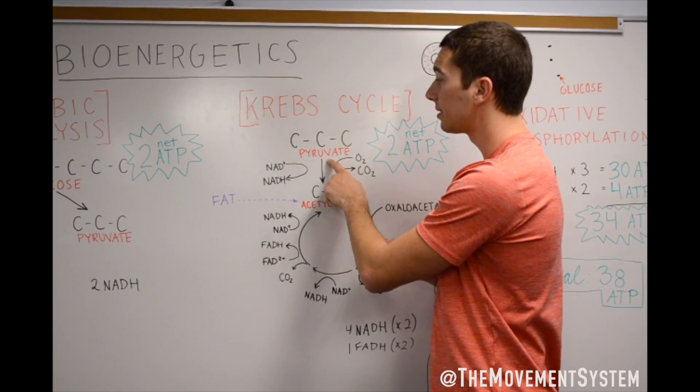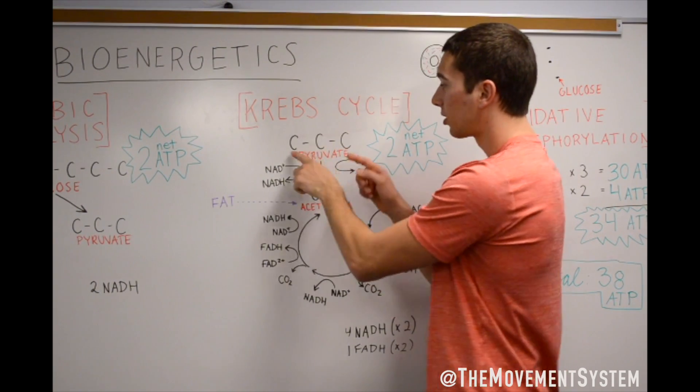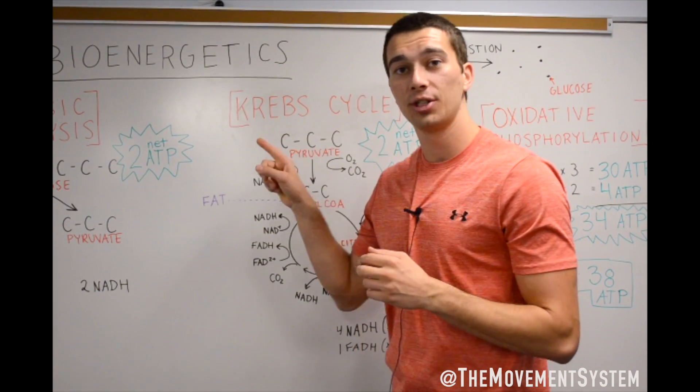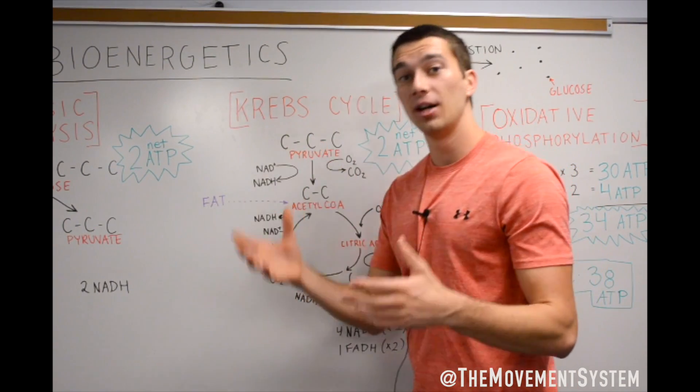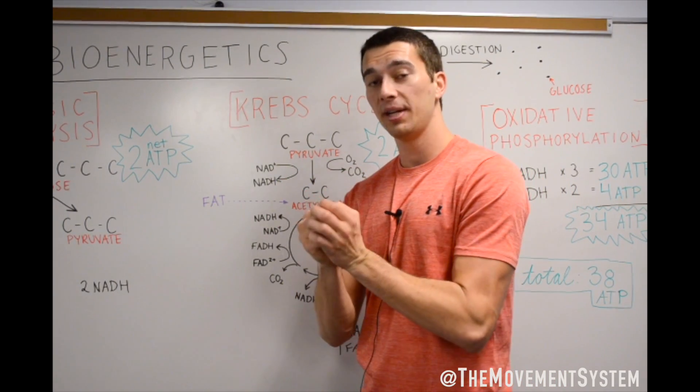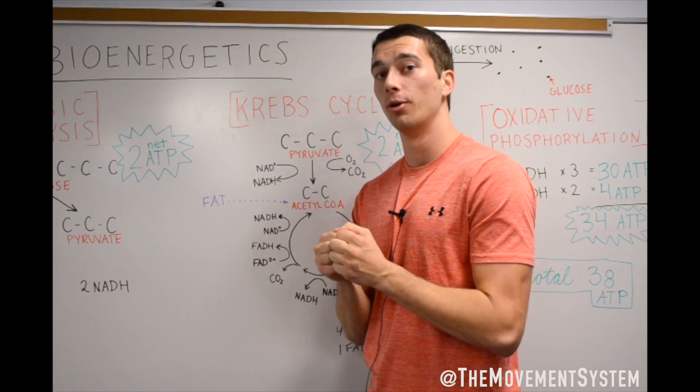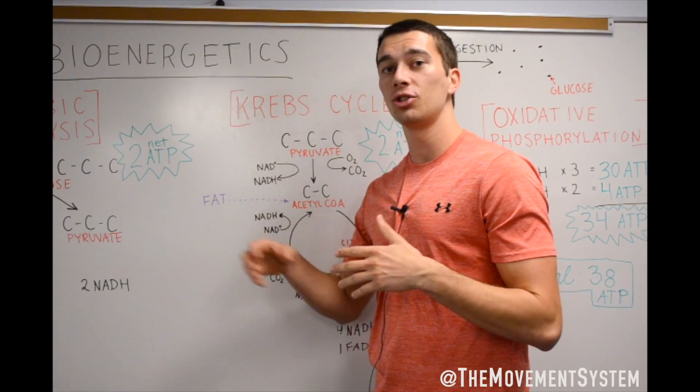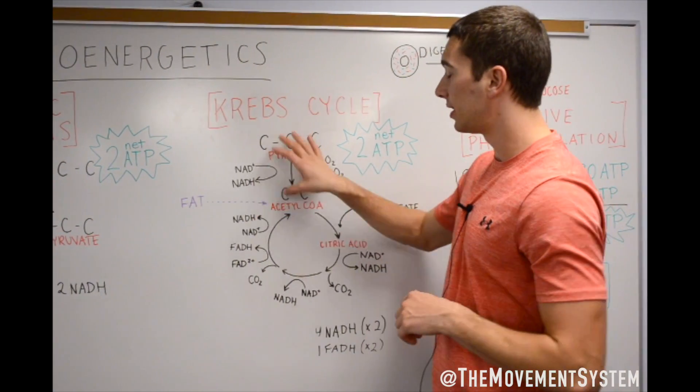So the first step of breaking this pyruvate down is turning it into this two carbon. So this three carbon structure, one of these high-energy bonds breaks. A carbon is detached. Where does that carbon go? Well, we have oxygen. Remember, we're in the mitochondria. It's oxygen rich. One of those oxygen molecules is going to attach to the carbon dioxide. That oxygen is going to attach to the carbon, and it's going to make a carbon dioxide molecule. That carbon dioxide molecule can then leave the cell, go back through the bloodstream, and then be expired through the lungs. We're also going to get an NADH out of this step.